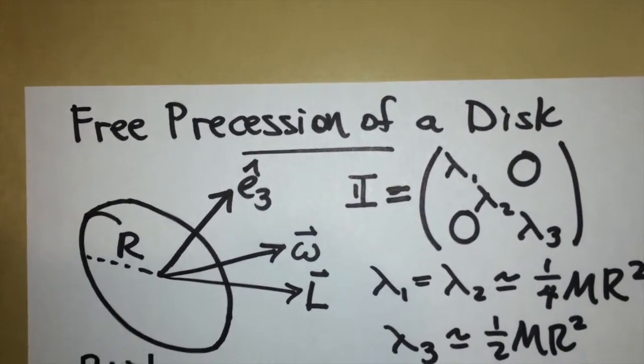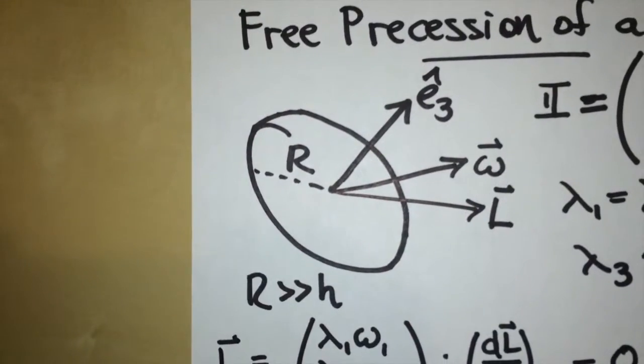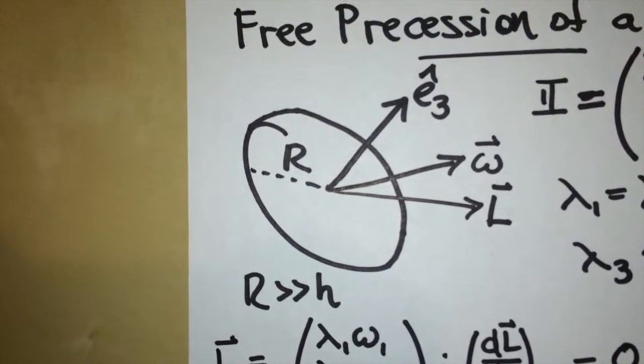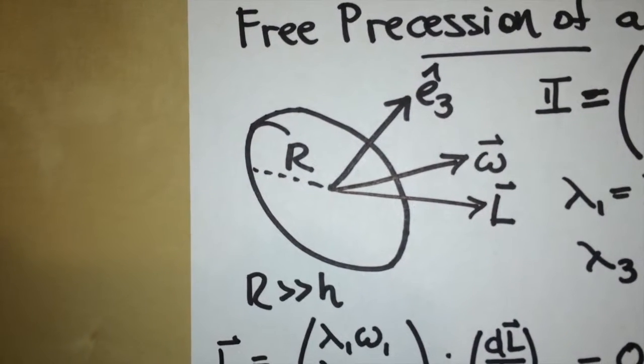I'm going to discuss the free precession of a disk. Here's a cartoon of my disk. The disk has three principal moments of inertia, the largest of which is shown here by the vector e3 hat.